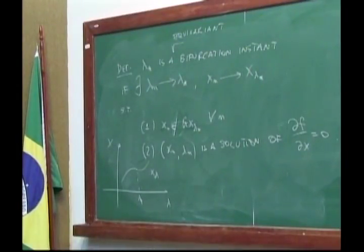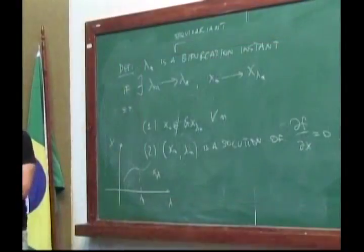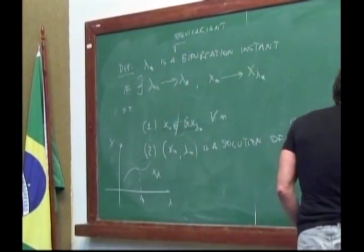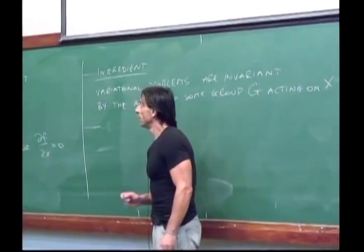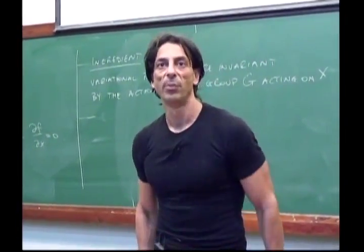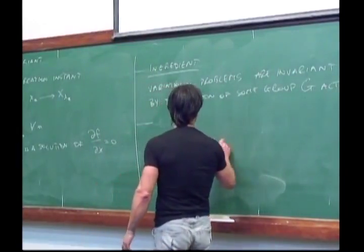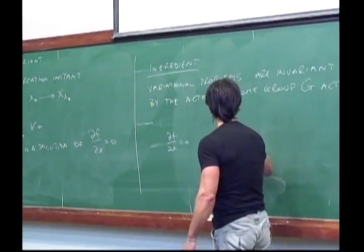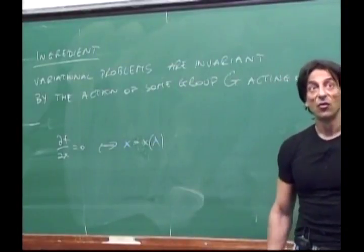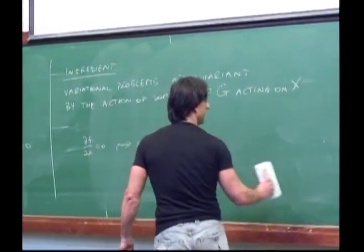I want to find conditions that tell me when an instant is an equivariant bifurcation instant. Basically, I want to know when the implicit function theorem doesn't hold. Having bifurcation is the same as not having the implicit function theorem — the implicit function theorem would tell me that solutions are of the form x = x(λ). So whenever the implicit function theorem doesn't hold, we have bifurcation. How does the implicit function theorem look in the equivariant case?